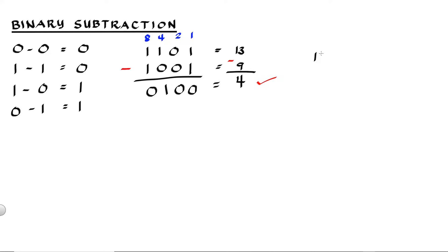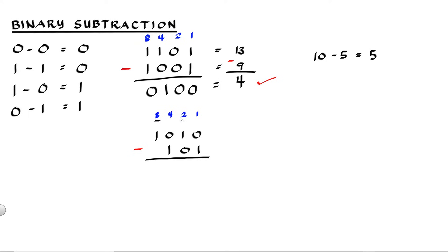For our next example, we have 10 minus 5, and we already know that the answer is 5. But let's take a look at how we do this in binary. 10 is equivalent to 1010, and 5 is equivalent to 101. To check: 8 plus 2 is equal to 10, and 4 plus 1 is equal to 5. We have to subtract 1 column at a time, starting from right to left.